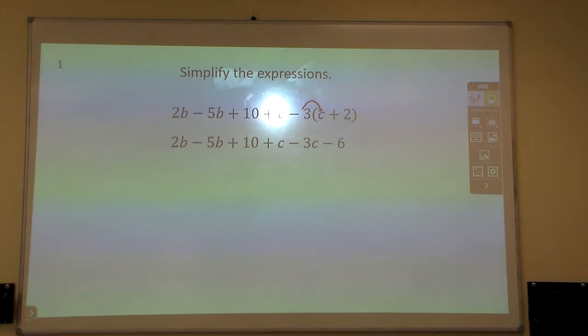I need to take the negative 3 times the c and negative 3 times the 2. That's why it says negative 3c minus 6. Everybody see that? I did that first. And if it's negative, it affects both those. It has to go to both of them.